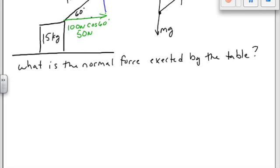Cosine of 60 is one half times 100, so that's 50 newtons total. And what about in the Y direction? Same thing except for sine. 100 sine of 60. And that's 86.6 newtons. So we've dealt with our components.